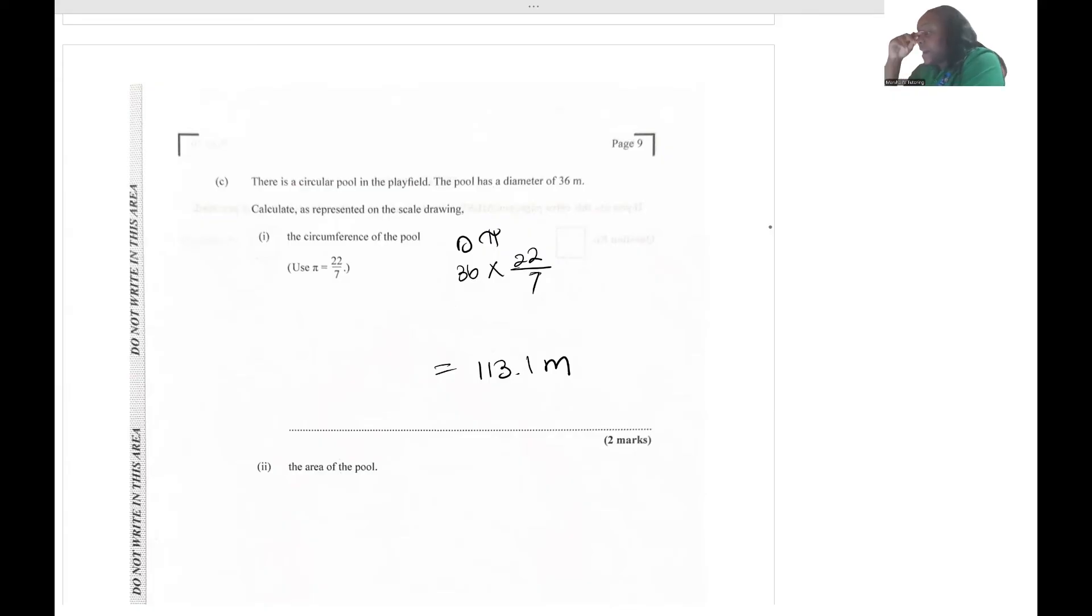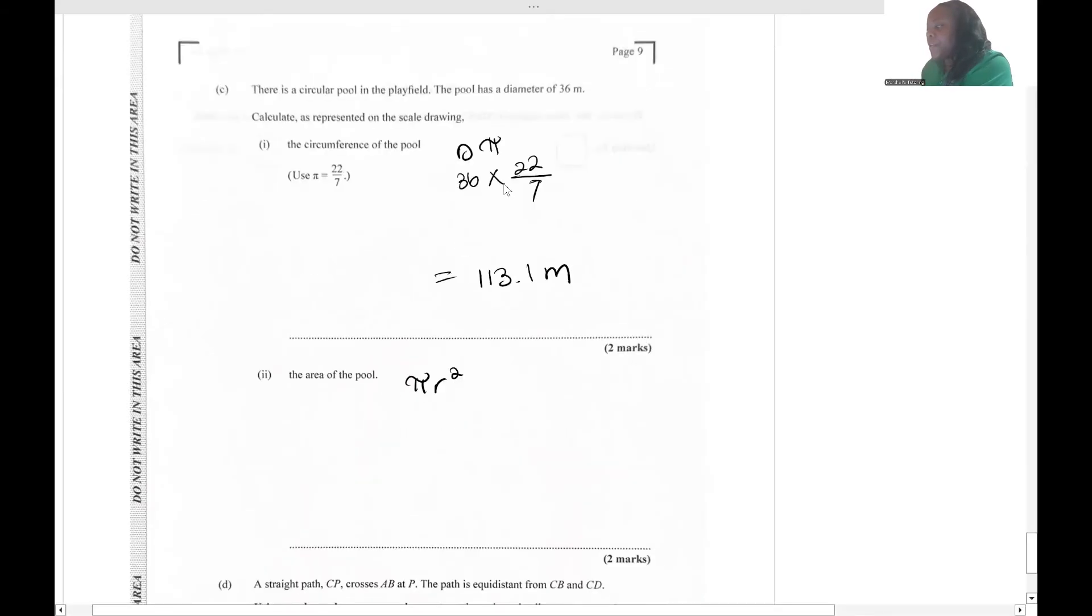Calculate the area of the pool now. We have the diameter, but the formula for area is πr². We have the diameter of 36. The radius is half of the diameter. So 22 over 7 multiplied by half of 36 gives us 18 - 18 squared. This is going straight in our calculators: 22 over 7 multiplied by 18 squared. That's going to give you roughly 1018.3 meters squared.